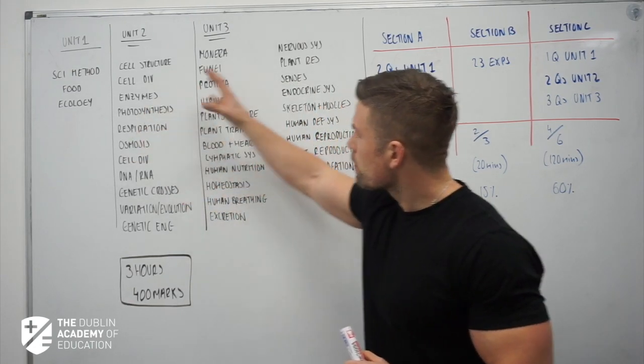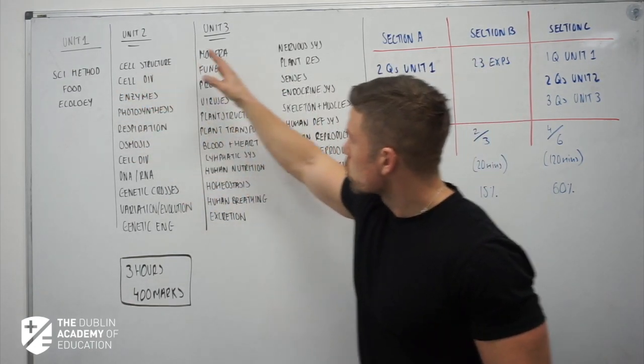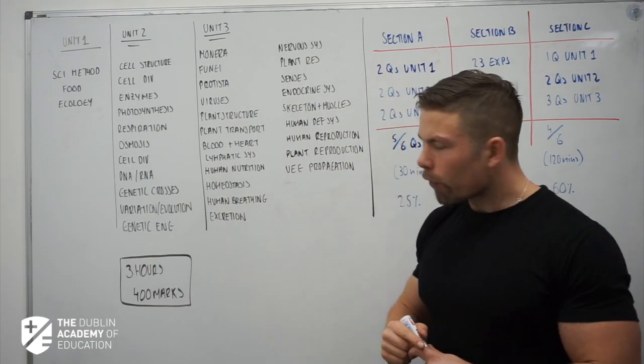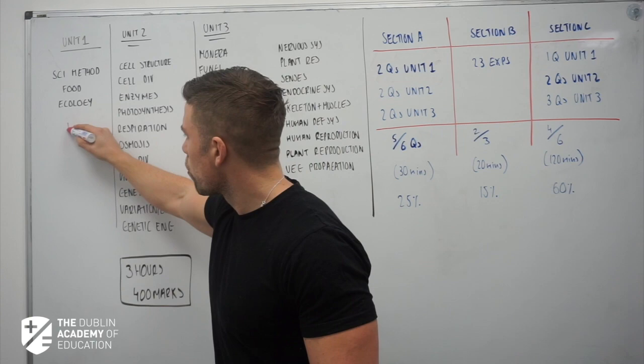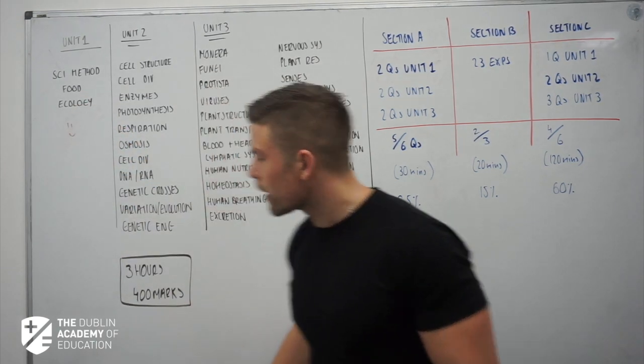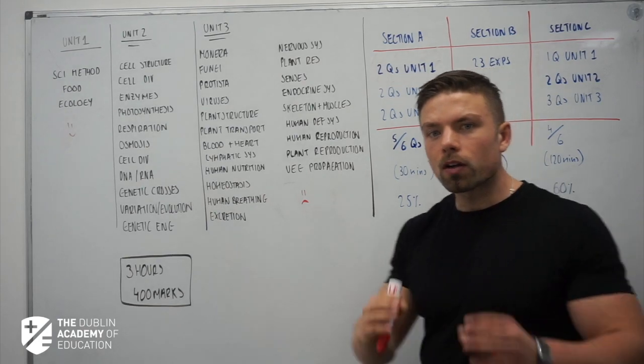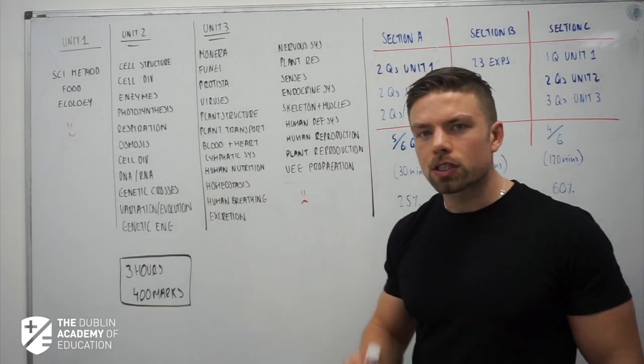On the board here I have put down Unit 1, 2 and 3, every single thing that is actually on your course. First thing that probably jumps out to you is Unit 1 is quite a small unit with only three things and Unit 3 has a serious amount. But I'm going to make you a little bit more comfortable with this if you just bear with me.